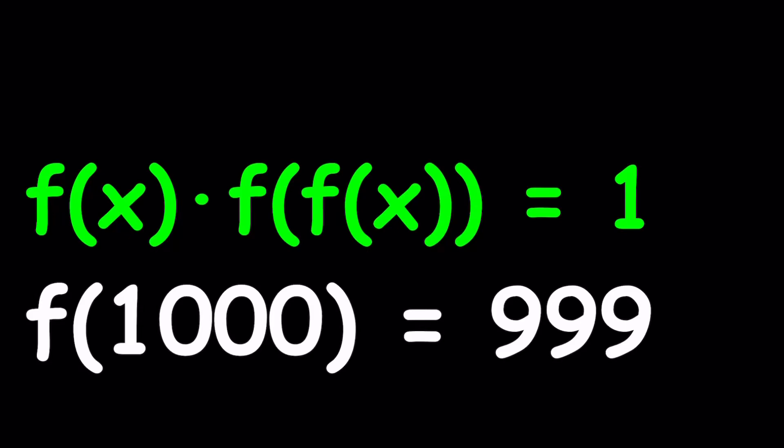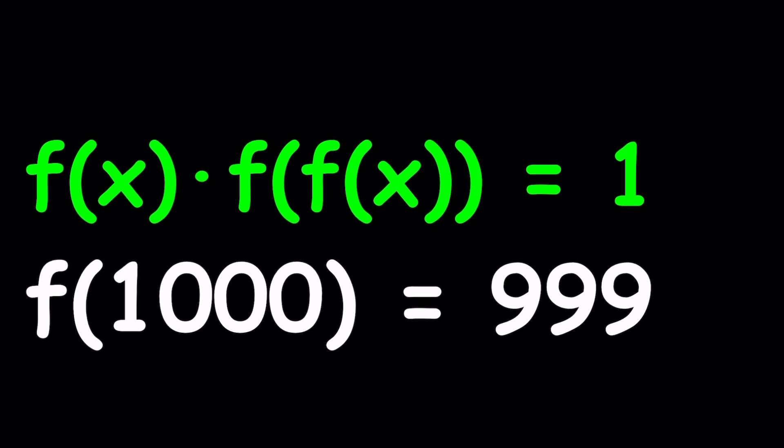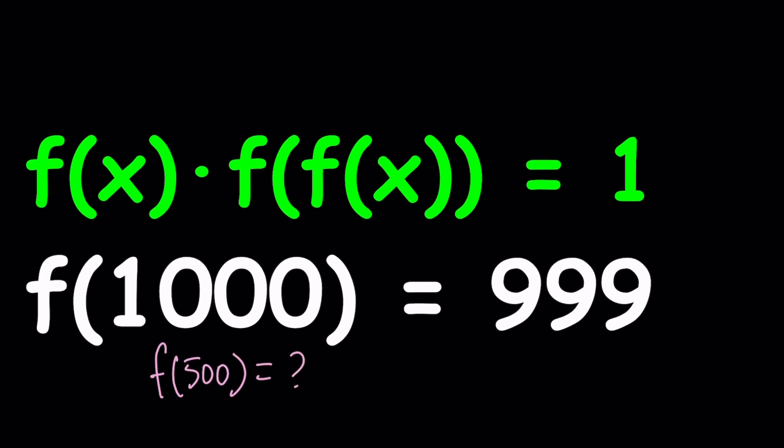Hello everyone. In this video, we're going to be solving an interesting functional equation — we're actually going to evaluate it at a point. We're given a function such that f(x) multiplied by f(f(x)) equals 1. We're also given that f(1000) is equal to 999. This is a continuous function and we're going to evaluate f(500). Our goal is to find f(500) based on the information given.